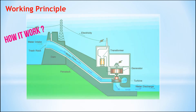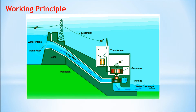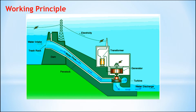A hydropower plant uses the force of falling water to generate electricity. A typical hydropower plant is a system that consists of a dam, trash rack, spillway, penstock, surge tank, and power station. Let's discuss each one.